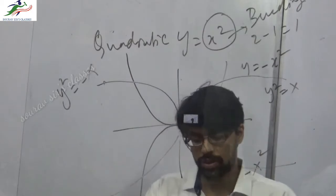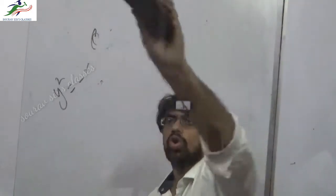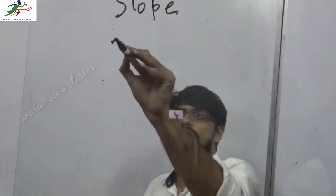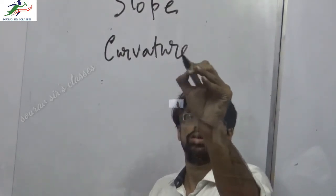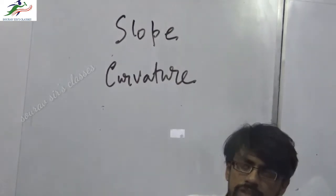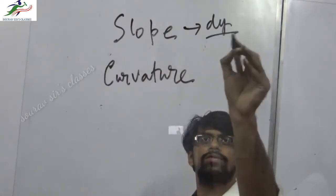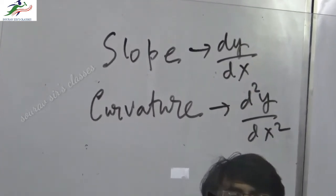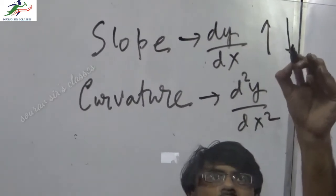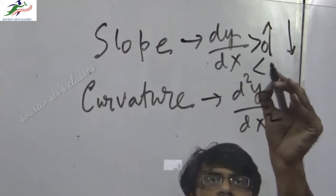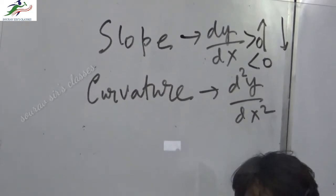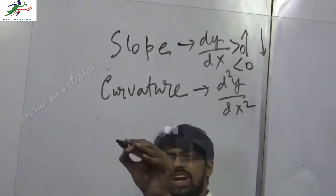Now let's look at slope versus curvature of a graph. Slope and curvature are not the same thing. Slope is determined by the first-order derivative dy/dx — if it is greater than 0 the graph is upward sloping, and if less than 0 it is downward sloping. Curvature is determined by the second-order derivative. There are two kinds of curvature: convex and concave.